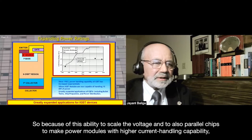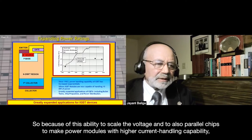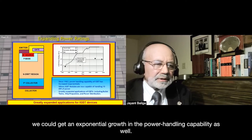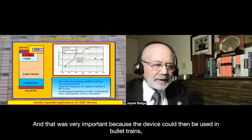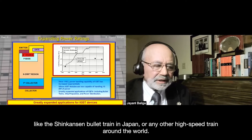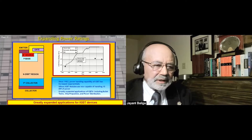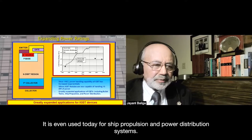Because of this ability to scale voltage and to parallel chips to make power modules with higher current handling capability, we could get exponential growth in power handling capability. That was very important because the device could then be used in bullet trains like Japan's Shinkansen, or any high-speed train around the world. It is even used today for ship propulsion and power distribution systems.